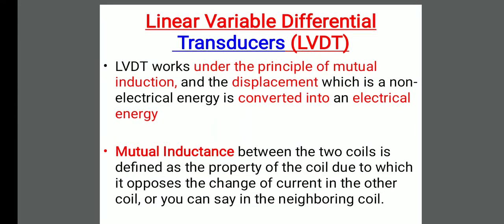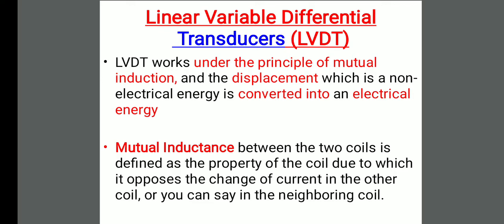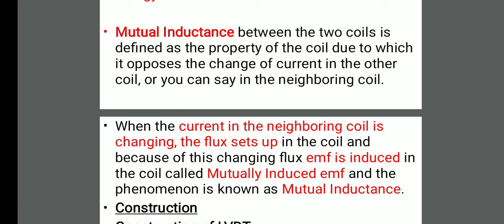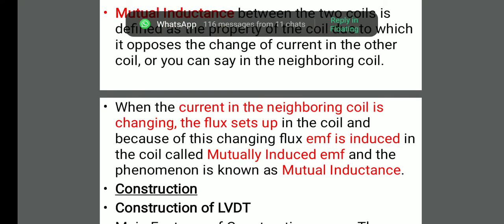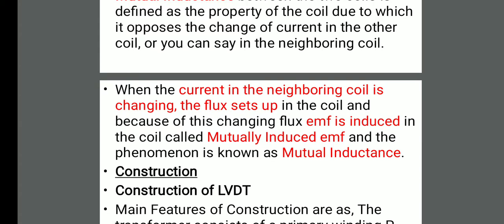Today we will see the working of a Linear Variable Differential Transducer, or LVDT. It is a transducer which works under the principle of mutual inductance. Displacement, which is non-electrical energy, is converted into electrical energy. Mutual inductance is the property of a coil due to which it opposes the change in current in the neighboring coil. Whenever the current in the neighboring coil is changing, there will be a flux set up, and because of this changing flux, there will be an EMF induced in the neighboring coil. That phenomenon is called mutual inductance, which is made use of in the LVDT transducer.